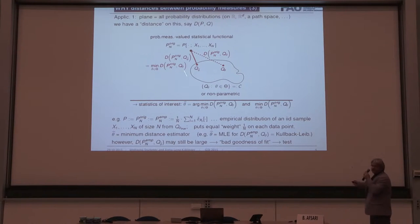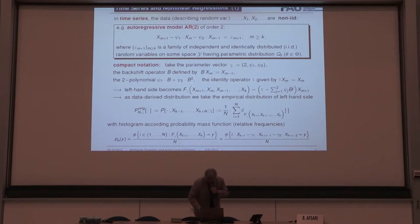But then after you've done this, still of interest is how large is this smallest distance, because if it's large, then it's a bad goodness of fit. You searched in the wrong data cloud. So you can do actually synchronously parameter estimation and goodness of fit in one go. That's very nice.